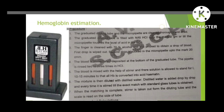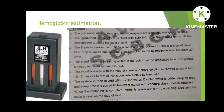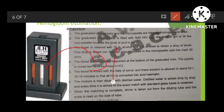For hemoglobin estimation, you use the hemoglobin estimation comparator. Take the test tube from inside the comparator. Add the dilution fluid up to 2 mL, then place it back inside the compartment.